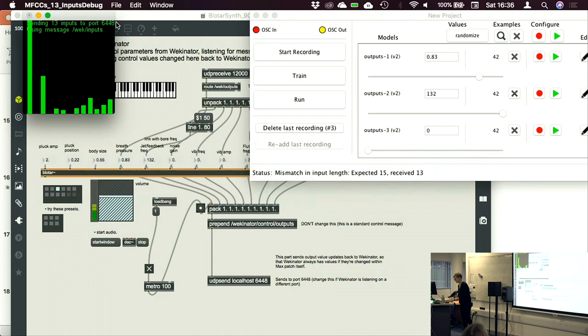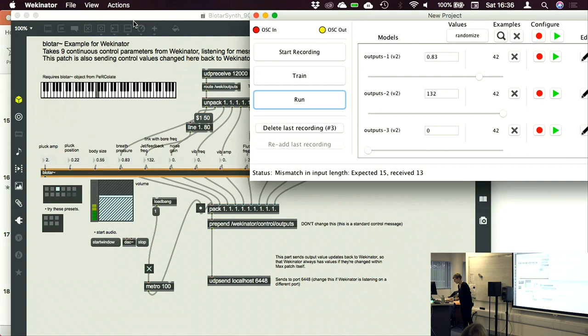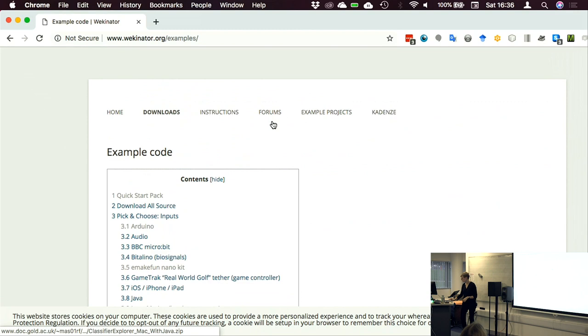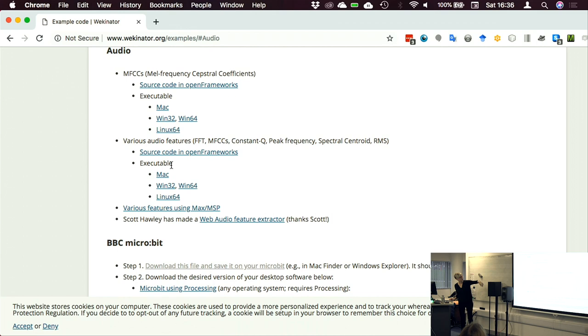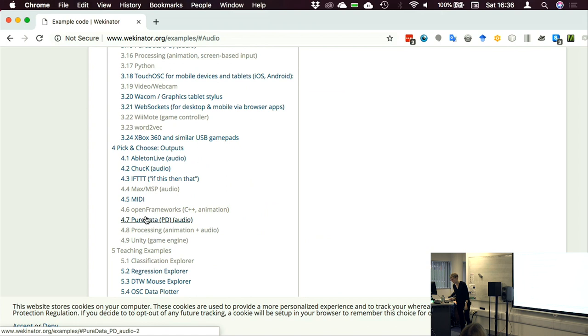I should also mention the Wekinator is free, it's cross-platform, it's open source, and if you go to the website, you have your pick of all sorts of inputs. So, for instance, there's a bunch of audio examples here in different environments you can work from, and then there's a bunch of output examples. So if you want to connect it to PD or Max or if this than that or Arduinos or whatever, you can do that. Other questions about this?